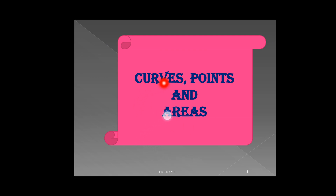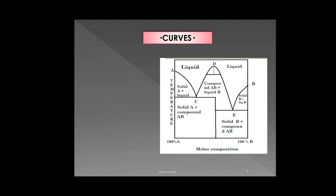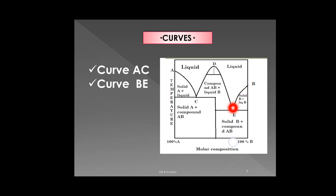In this phase diagram, various curves, points, and areas are present. Three different curves are present: the first curve is curve AC, the second curve is curve BE, and the third curve is curve CDE.